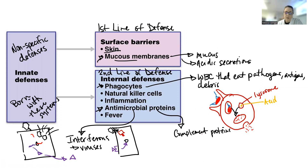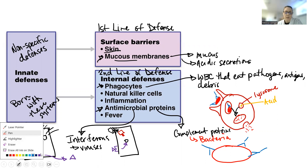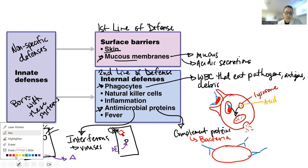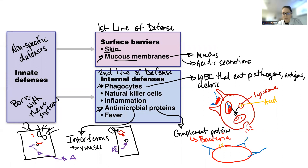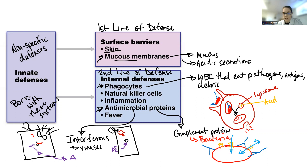The complement protein system is for bacteria. You have a bacterial invader with antibodies bound to it — a macrophage can come and eat it, or cells can release complement proteins. What happens is these complement proteins build a hole in the bacterial cell. Because there is more fluid outside of the bacterial cell, that fluid rushes in and causes the bacteria to explode, so it can no longer infect the body.